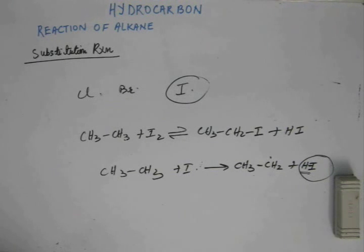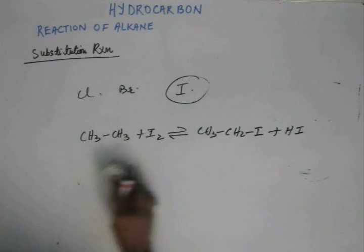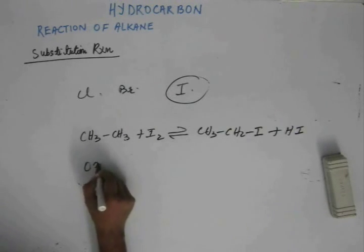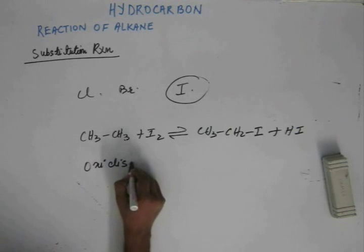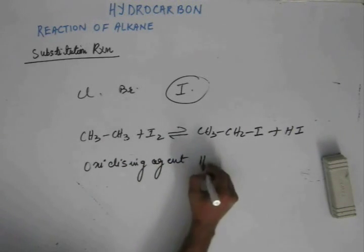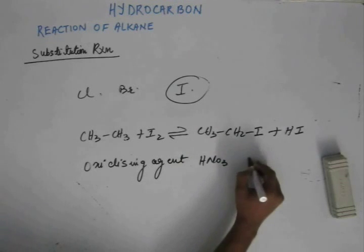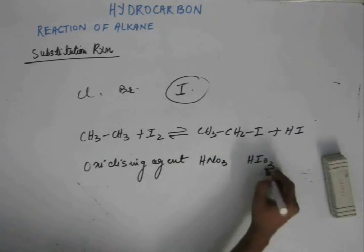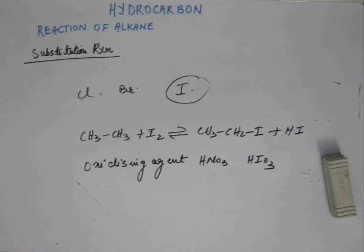In order to avoid that, let's remove off this HI. If there is no HI, there is no question of coming backward. So what we do is we use a strong oxidizing agent like nitric acid or iodic acid, so that a strong oxidizing agent oxidizes that HI.